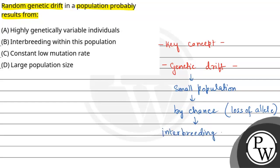What is interbreeding? If two different species or populations meet/breed with each other, that is called interbreeding. This leads to genetic variation. So in a small population — which is already small — if interbreeding also occurs, even more variations are seen at the gene level, causing the previous gene pool to be lost. So loss of alleles is also seen here.